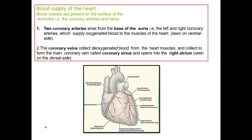Blood supply to the heart: blood vessels are present on the surface of the ventricles, known as coronary arteries and coronary veins. There are two coronary arteries — the left and right coronary arteries — which arise from the base of the aorta and supply oxygenated blood to the muscles of the heart.